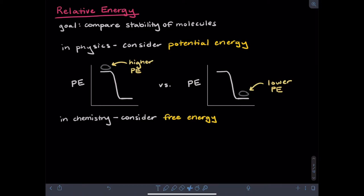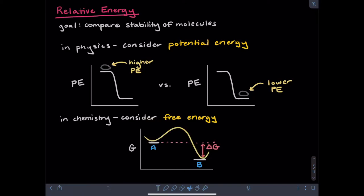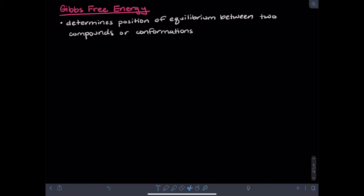In chemistry, instead we'll consider free energy. I could plot the relative energies of molecules A and B in this graph, where my y-axis is Gibbs free energy. Let's consider molecules A and B can interconvert by the following energy pathway, which involves a single barrier. If we're talking about Gibbs free energy, we're just looking at the difference in energy between A and B, not the barrier height. We'll get to the barrier height issue when we get to kinetics. It is this Gibbs free energy that is going to determine how much of each compound we have in a solution at equilibrium.